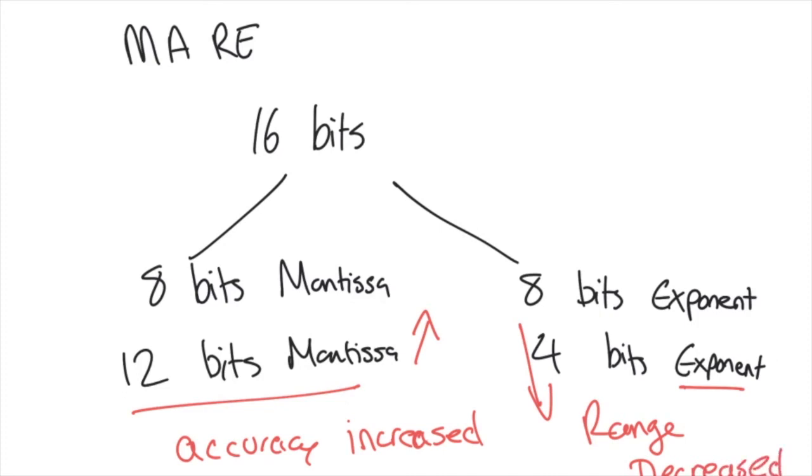If we used more bits for the exponent, the range would increase. If we used less bits for the mantissa in this example, the accuracy would have decreased. It just goes back to this MARE: if the exponent goes up, so does range; if mantissa goes up, so does accuracy. But if you've got a limited amount of bits, if one of them goes up, the other one needs to go down.